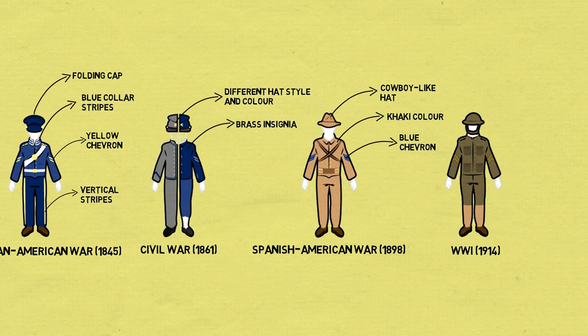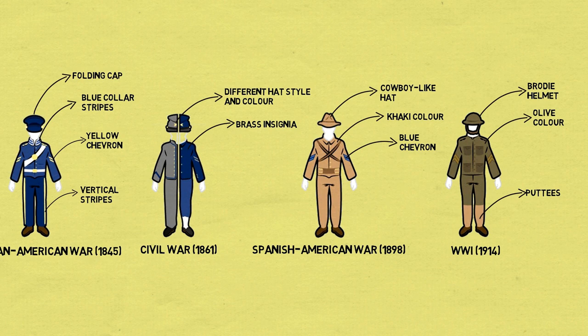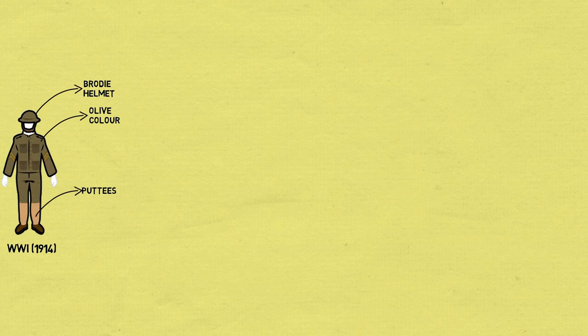World War I 1914: The uniforms of World War I are largely recognizable. The brown khaki color of the uniform had shifted to an olive color. Soldiers also wore puttees around their legs and adapted the Brody helmet from the British.